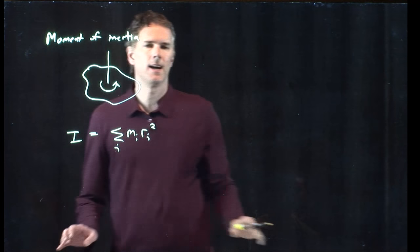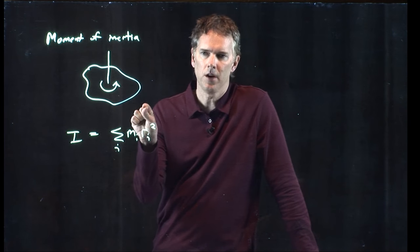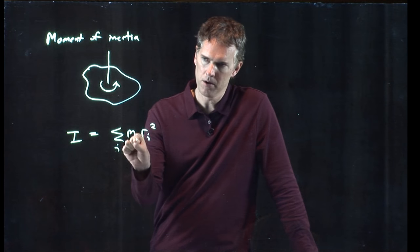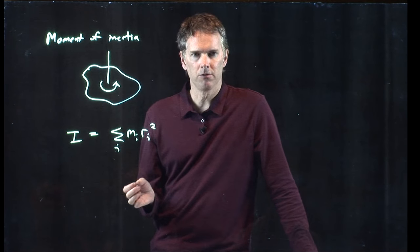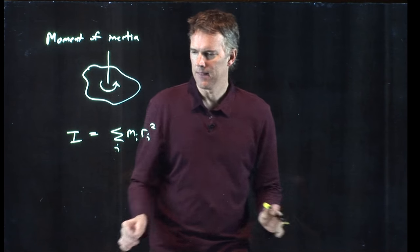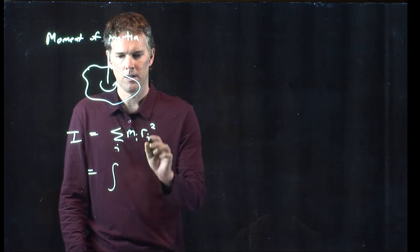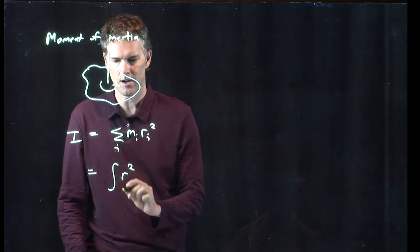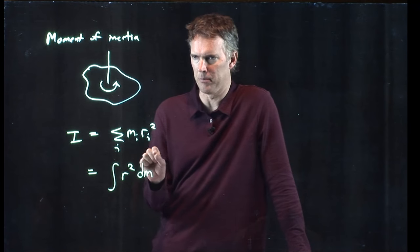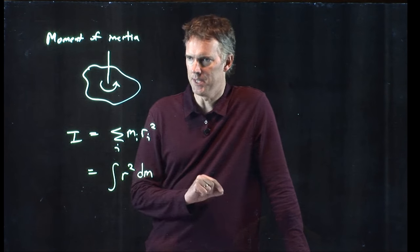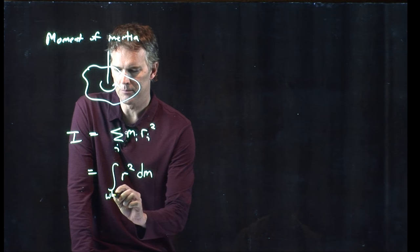So whenever you have a summation, if you just reduce the size of your m to infinitesimal, it becomes an integral. And that's all we have to do here. The summation becomes an integral. The r squared hangs out. The m becomes an infinitesimal piece of mass, which is what we call dm. And then you integrate this over the whole object.